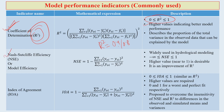The Nash-Sutcliffe Efficiency (NSE or NAC) is widely used in hydrological modeling. A higher value near 1 is desirable. NSE is one step further improvement over R², though R² is still widely accepted in the modeling community.